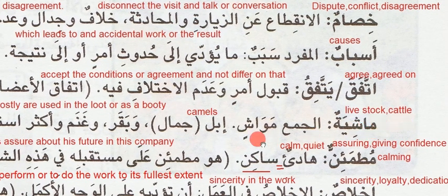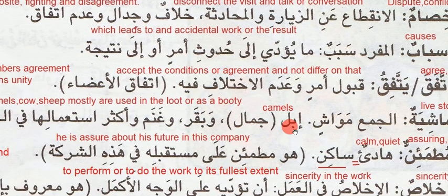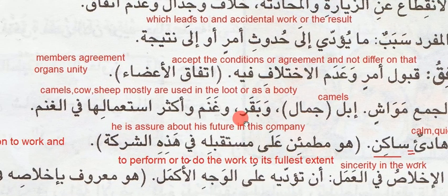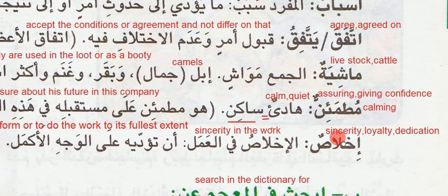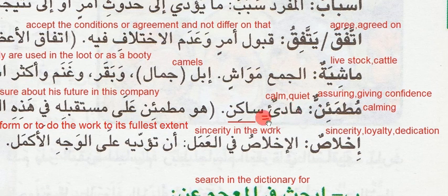Mashiya means livestock or cattle. Jama is mawais or mawashin. Ibil means camels — this is jamal, and the other name is ibil. Wa baqara wa ghanam — camels, cows, sheep — mostly used as booty or loot. Fil ghanam means booty or the loot. Mutmaein means assuring, giving confidence or calming. This is the same as calm or quiet — saakin also means calm or quiet. These meanings are interrelated with each other.